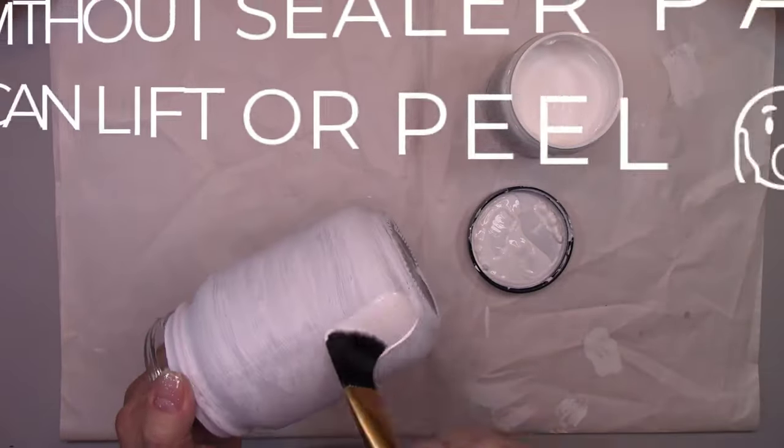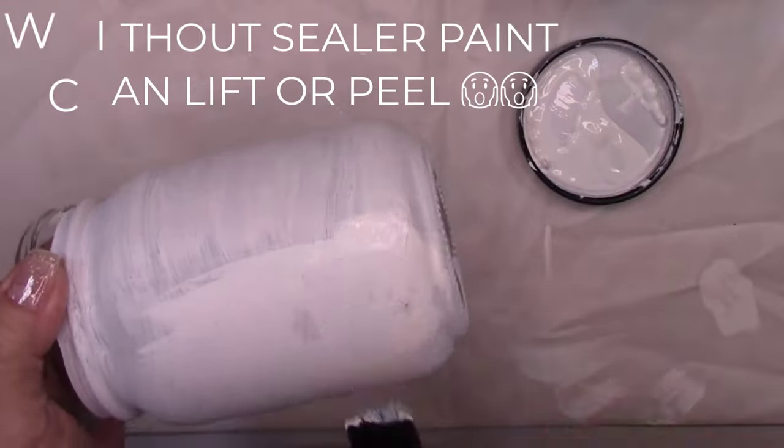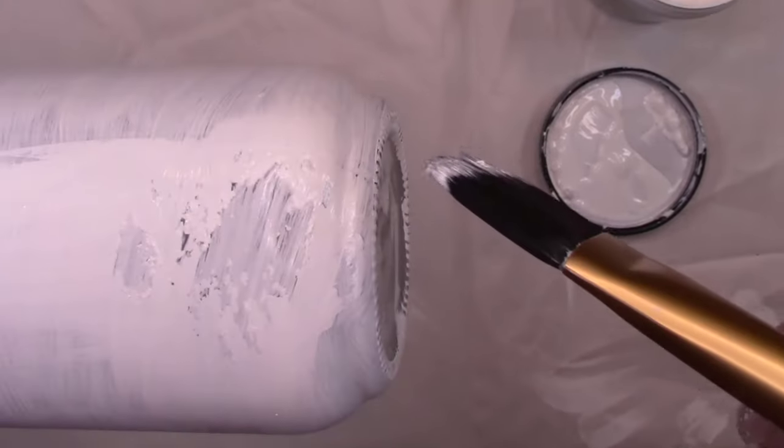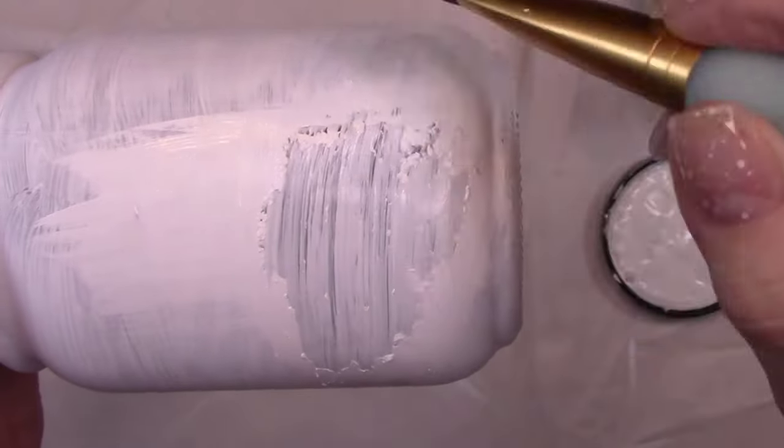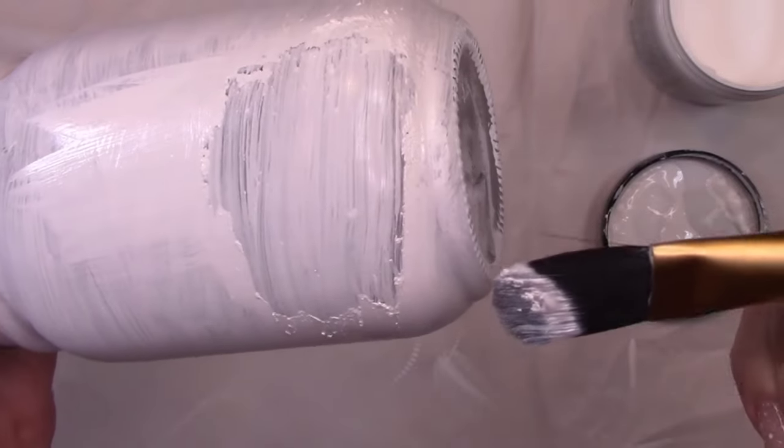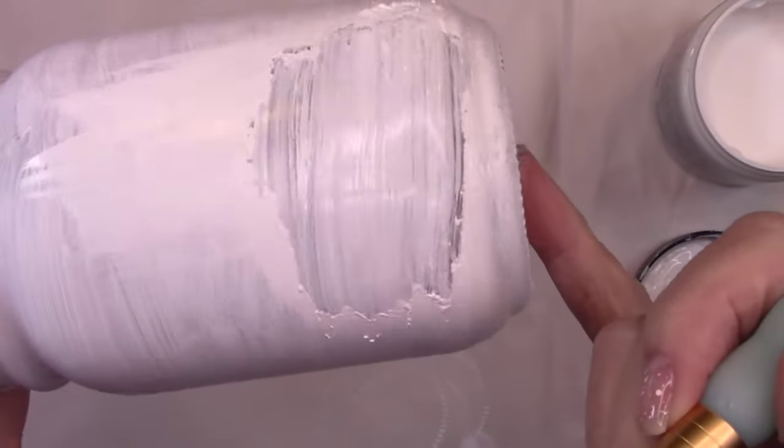And this is what happens if you don't put the matte sealer between your first and second coats of paint. As you can see, as I'm putting the second coat of paint on, it's lifting the first coat right off the jar.